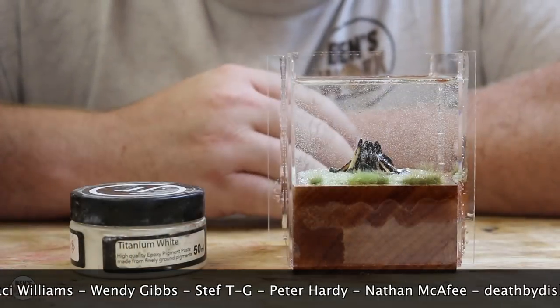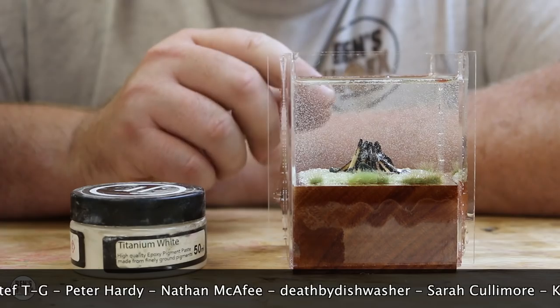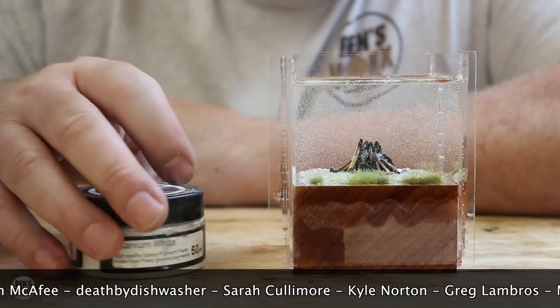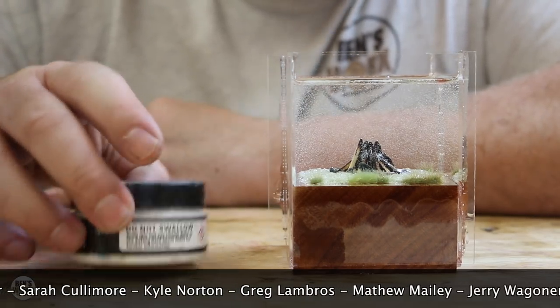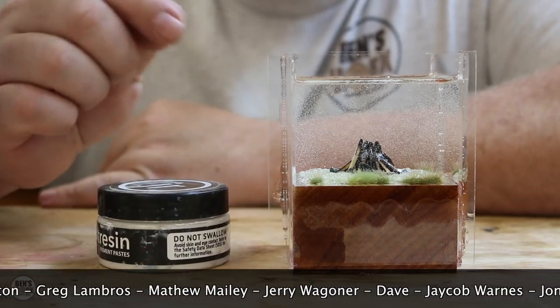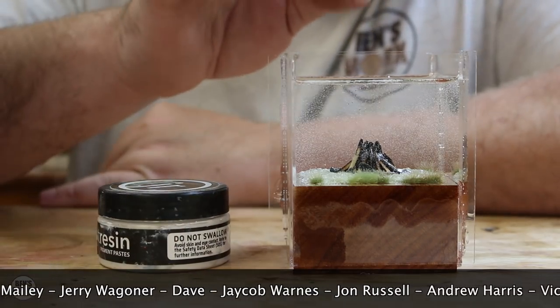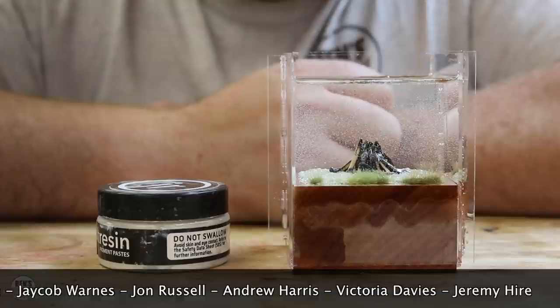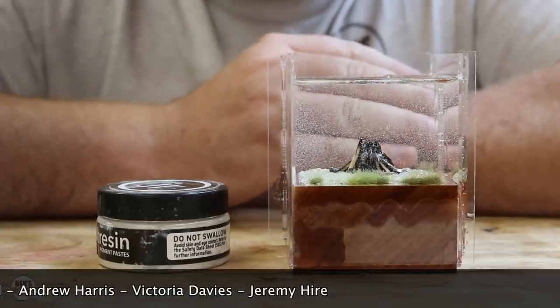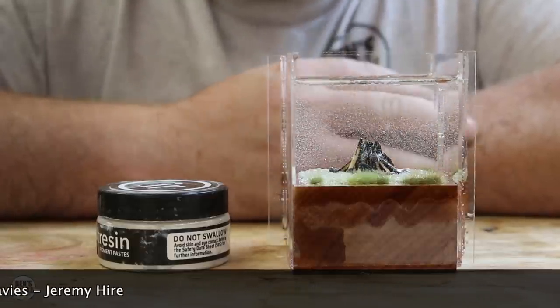Before I go popping this in the pressure pot, I'm going to wait for this resin to thicken up a little bit. Then I'm going to take some Just Resin paste, this is the titanium white. I'm going to put some on the end of a toothpick. I'm going to see if we can create some smoke trails. Now this process can be a little hit and miss, so we'll just see how we go.